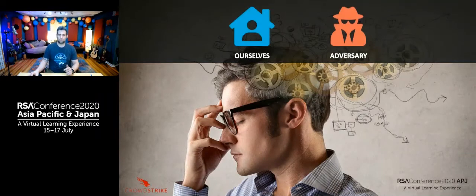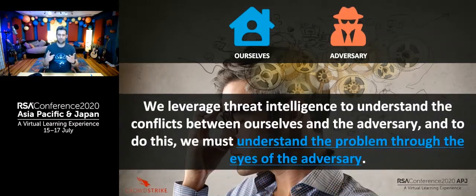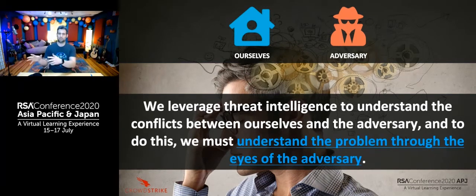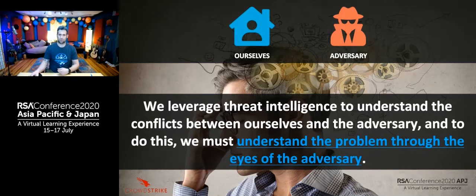When it comes to threat intelligence, we want to leverage it to understand this conflict — that is ultimately our goal. The better we understand the conflicts we're in, including the adversary's capabilities, why they're attacking us, and even how they perceive our organization, the more we can address. Once we gain an understanding of these conflicts at a core level, we can communicate it to our various stakeholders, who can then take productive actions to defend the organization.